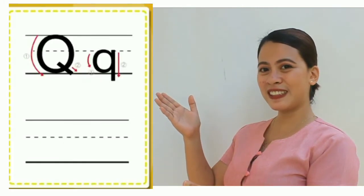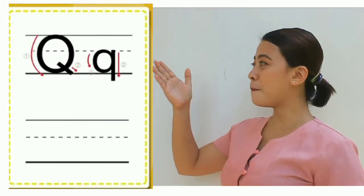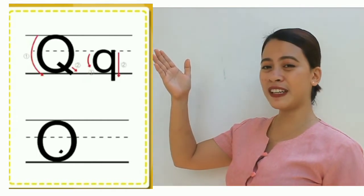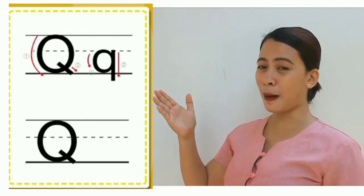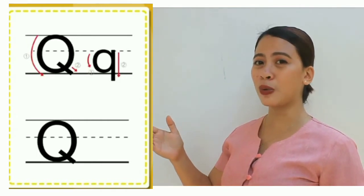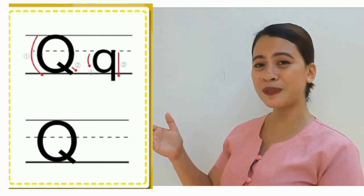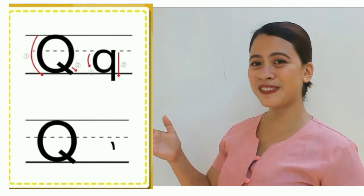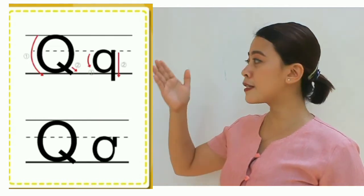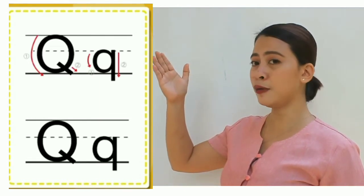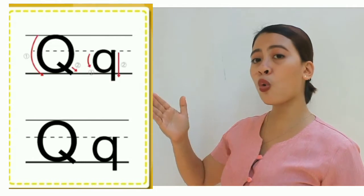Let's trace the capital letters and the small letters. Let's have the first one. Big Q, capital Q. Trace it below. Small Q, qu.